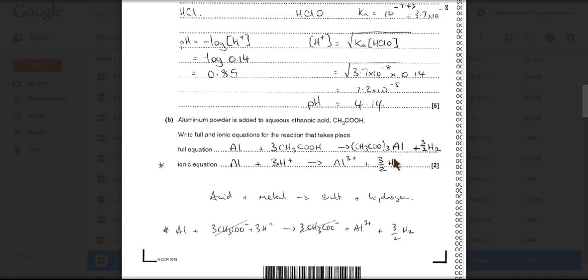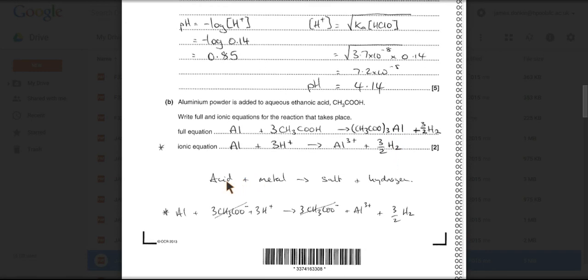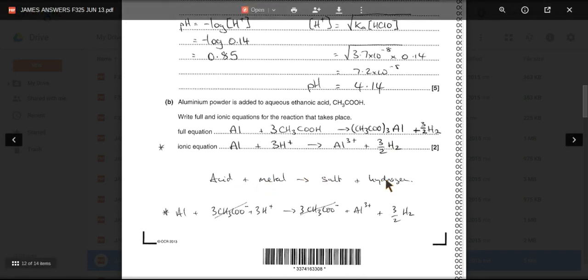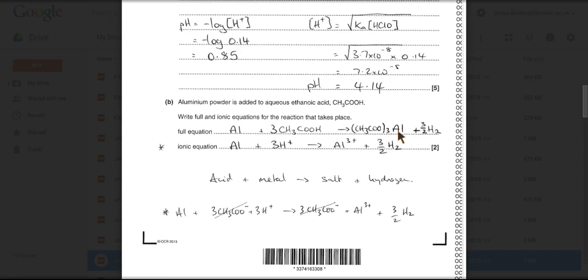The two equations, so you can see I've written up in very simple terms. Acid plus metal gives salt and hydrogen. And so the full equation would be this one here. This salt is made from aluminium 3 plus ions. These have 1 minus charges, so we need 3 of those. And it's all balances like that.